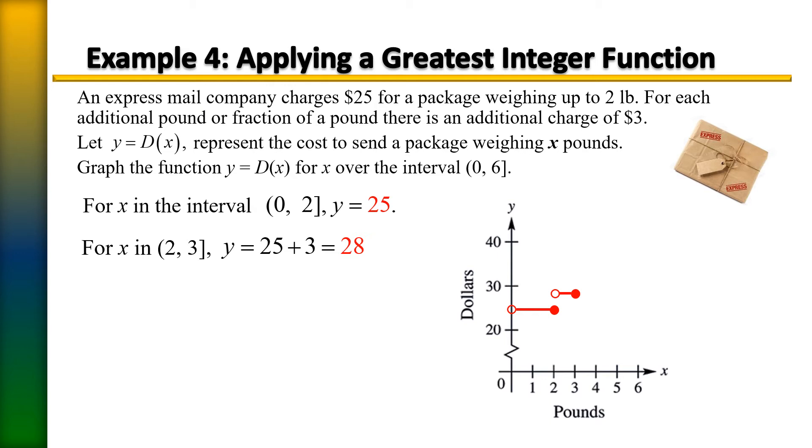So what happens if it weighs more than 3 pounds? We have to add an additional $3 to that. So 28 plus 3. And that's going to be an interval of a package weighing between 3 and 4 pounds. So now we're going to jump up to 31 and our interval is going to be between 3 and 4, you're going to pay $31.